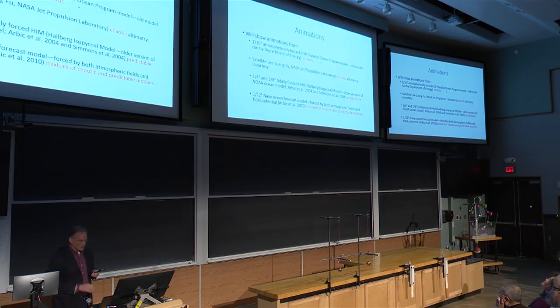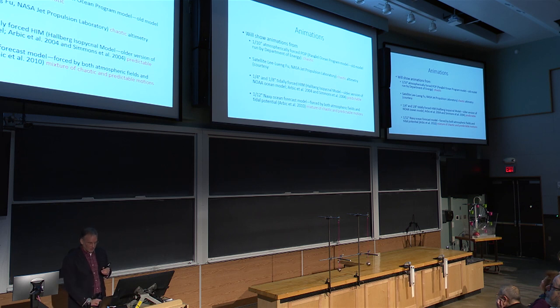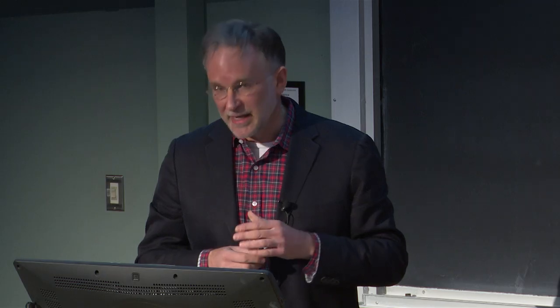Let me show some animations — first of a model that the Department of Energy ran on Japanese computers. The oldest ocean model is called the Modular Ocean Model or MOM; this one is the Parallel Ocean Program, or POP. This simulation shows what the ocean looks like if it's forced only by the atmosphere — winds blowing, which drives currents; air-sea heat exchange, which controls sea surface temperatures; and evaporation and rainfall, which controls salinity. Temperature and salinity control the density.